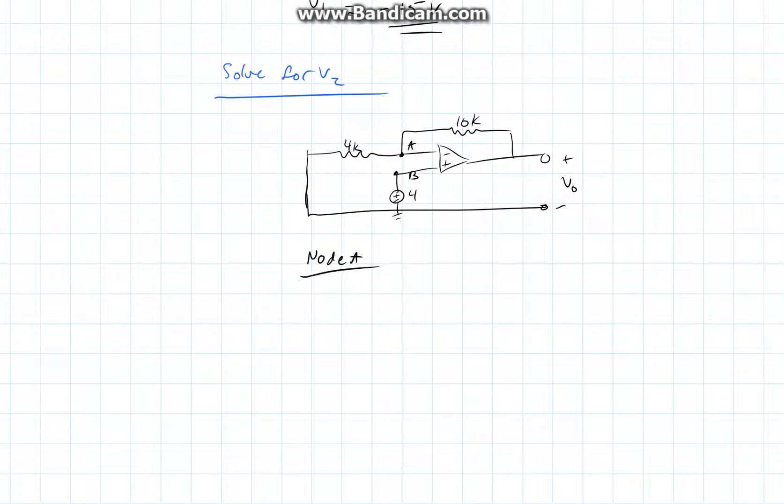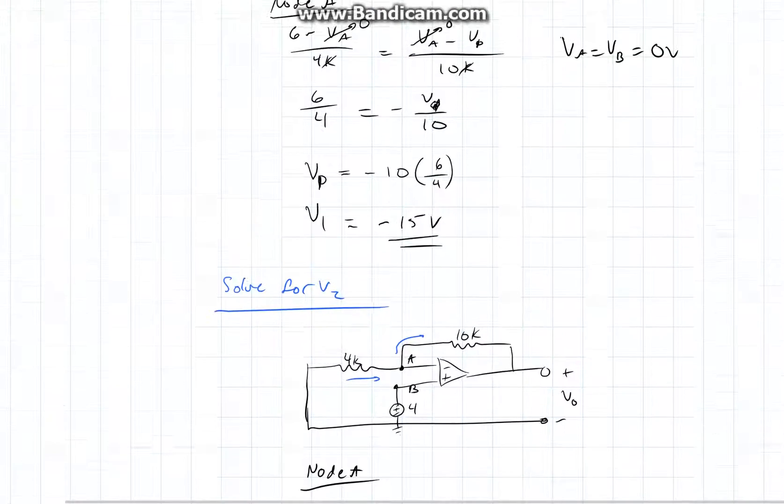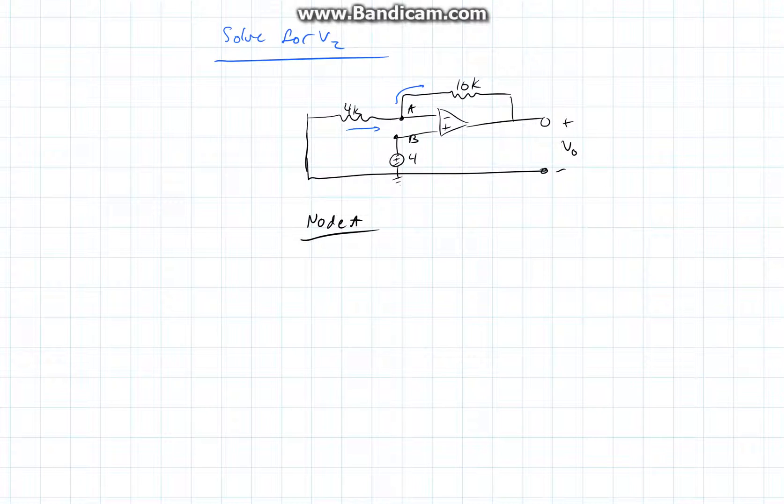So looking at node A, with the currents going in the following directions, we can now obtain the following equations.